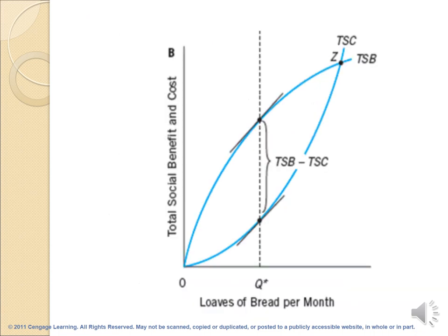We can also find the efficient point using the total social cost and total social benefit curves. The efficient output Q* occurs where the difference between total social benefit and total social cost is at its highest.